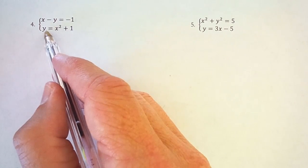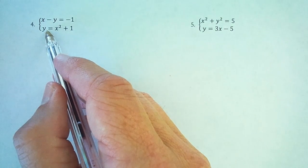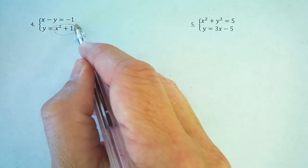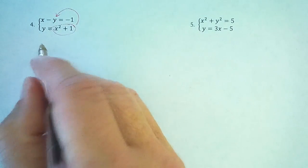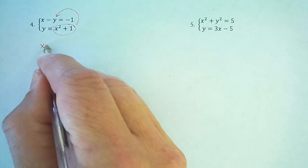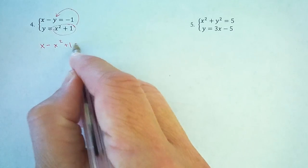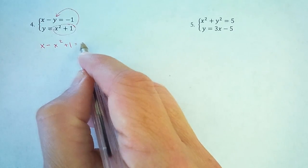Now this is already solved for y, so let's take that value of y right here and plug it in right here. So we've got x minus, and then the y becomes x squared plus 1 equals negative 1.